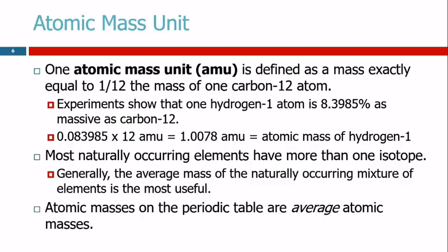So then you can just do a little math. You take this percentage, divide by 100 to get the fraction, multiply by 12 atomic mass units, and you come up with 1.0078 atomic mass units. This is the mass, the atomic mass of one hydrogen atom.